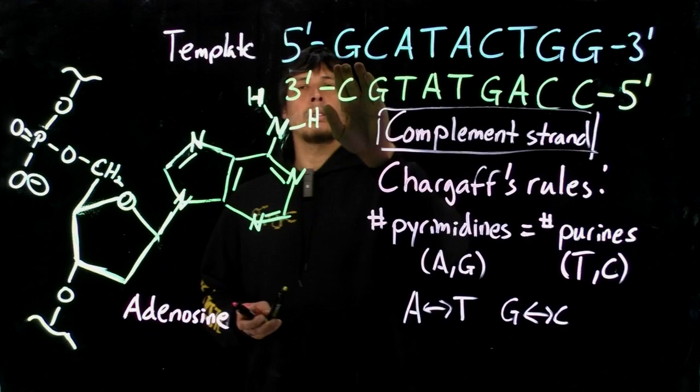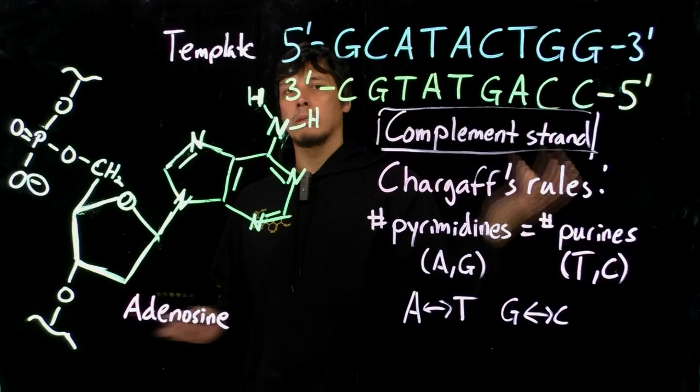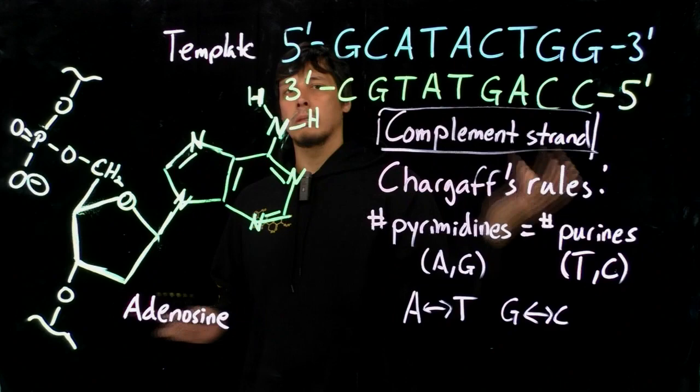So this is why, for DNA, if you have a strand of DNA, typically if you're looking at the sequence, the only sequence that would be given is the sequence of the template strand. Because you can infer the sequence of the complementary strand, again, by Chargaff's rules, where an A will pair with a T and a G will pair with a C.